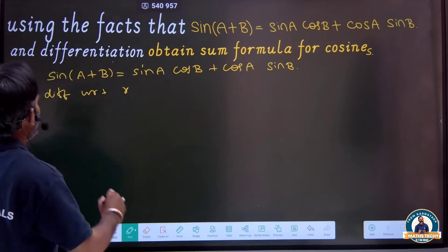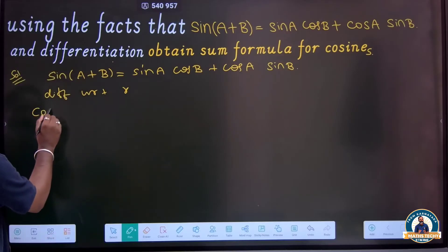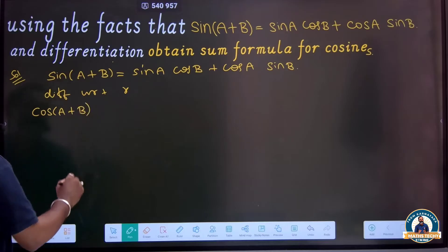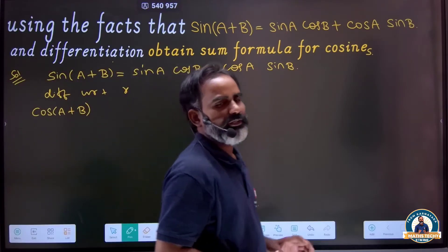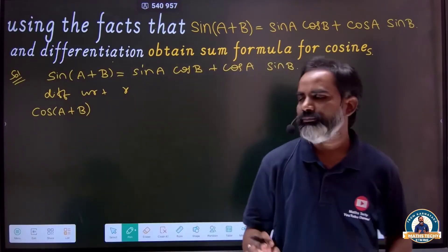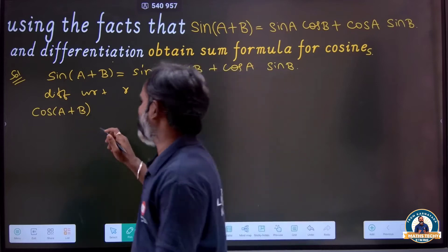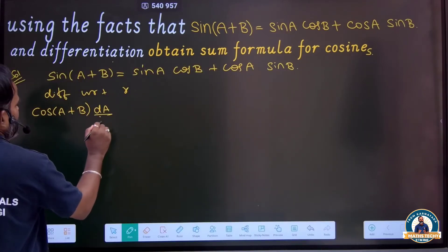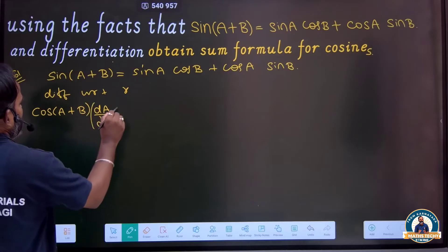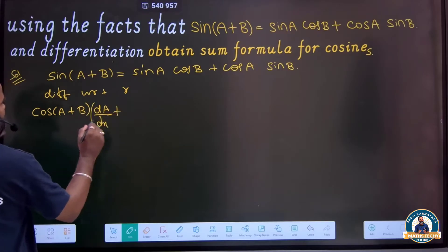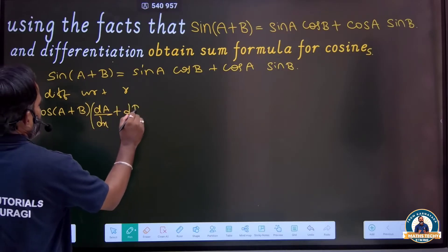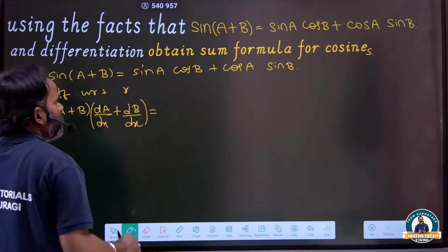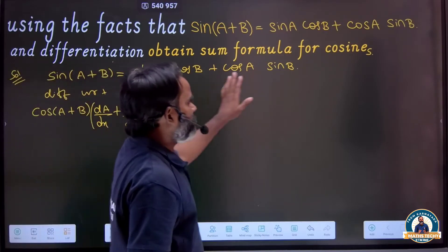The differentiation of sin(a+b) will be cos(a+b). Applying the chain rule, sin differentiation gives cos(a+b), multiplied by the differentiation of (a+b) with respect to x, which gives da/dx plus db/dx.